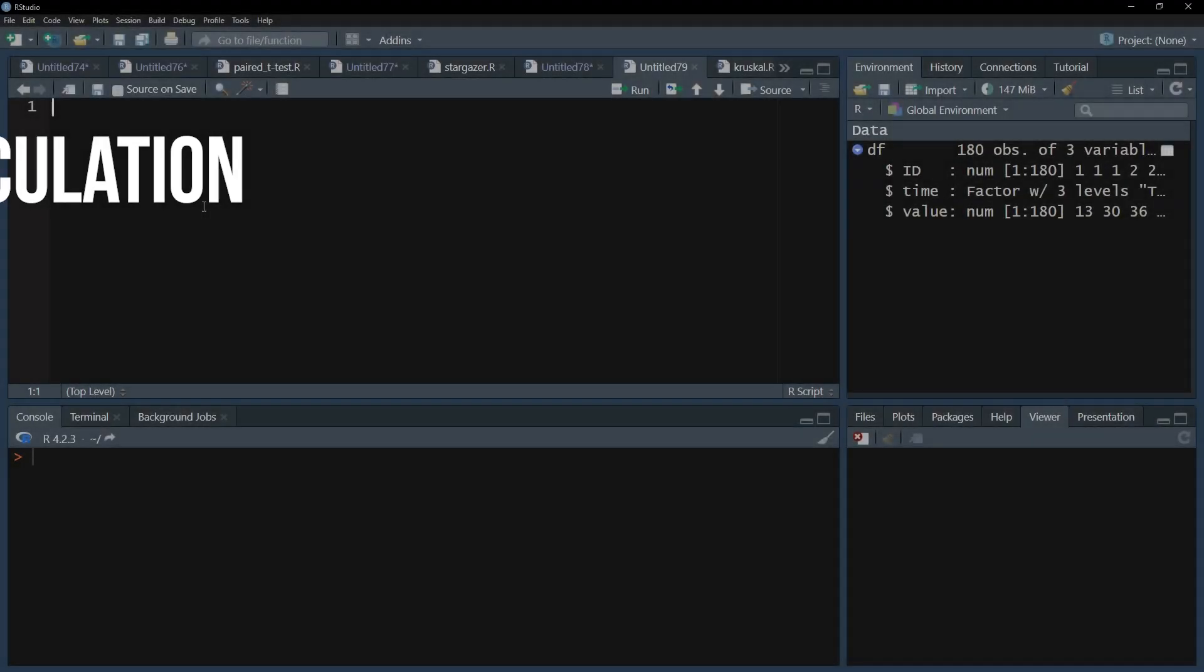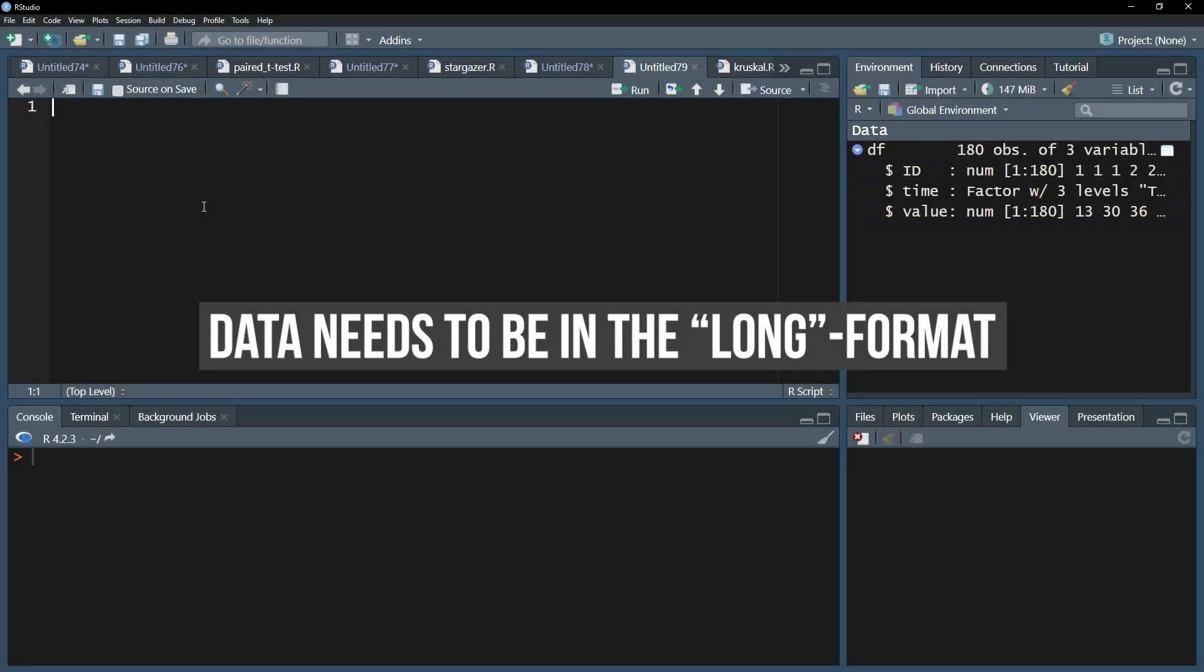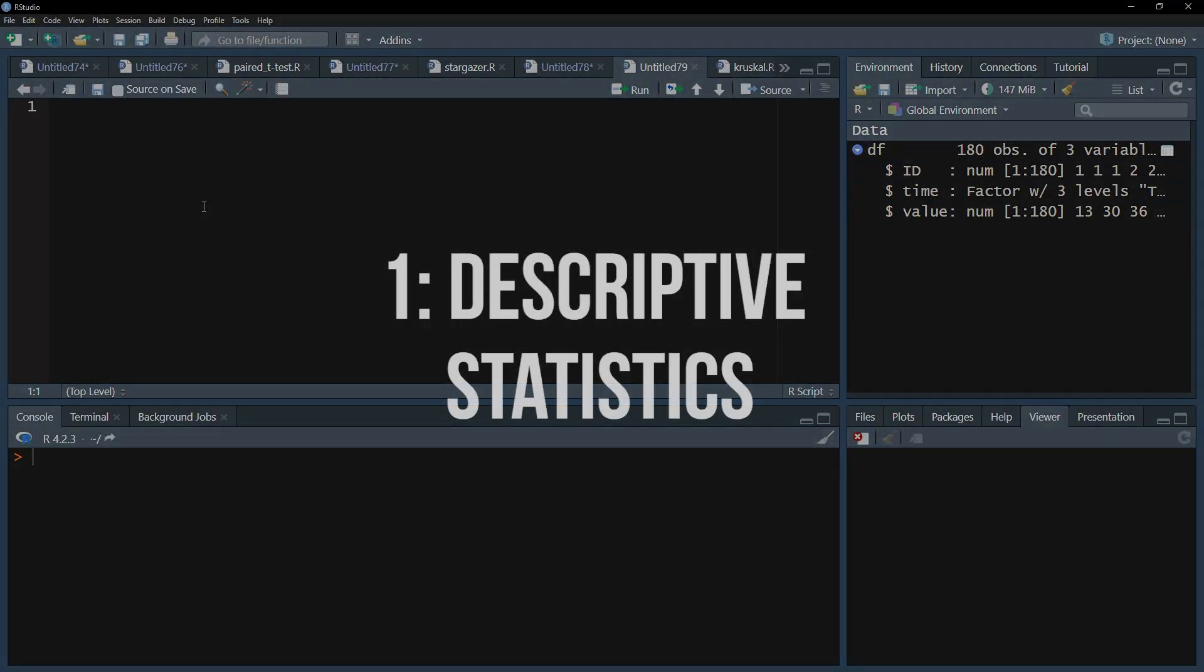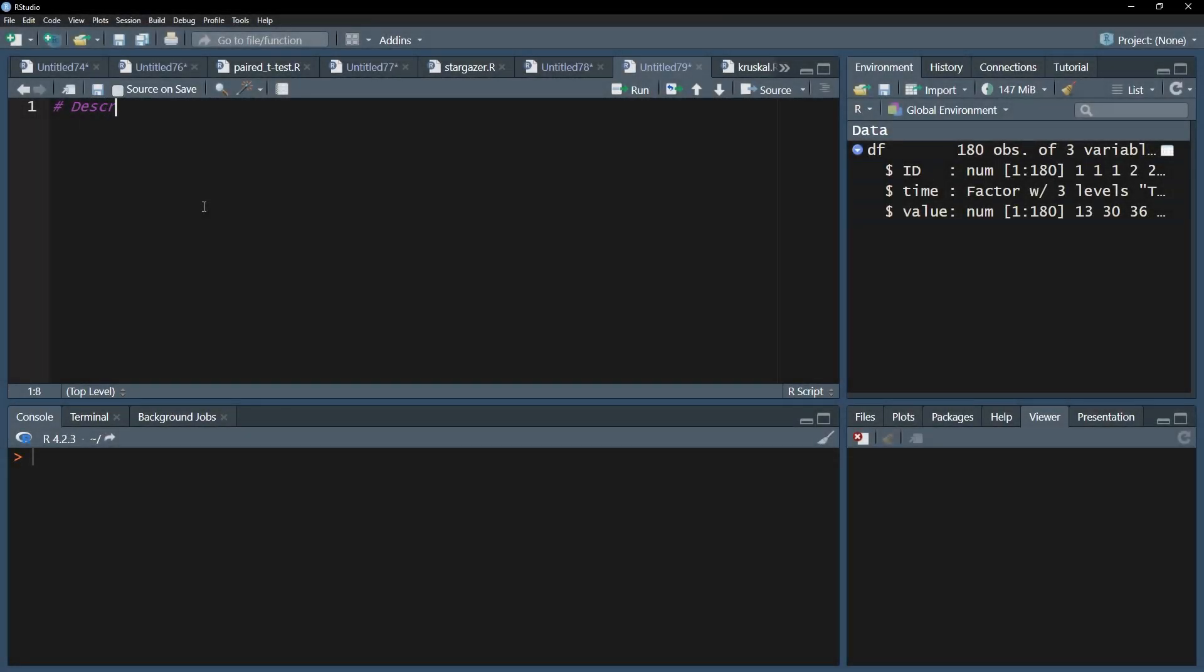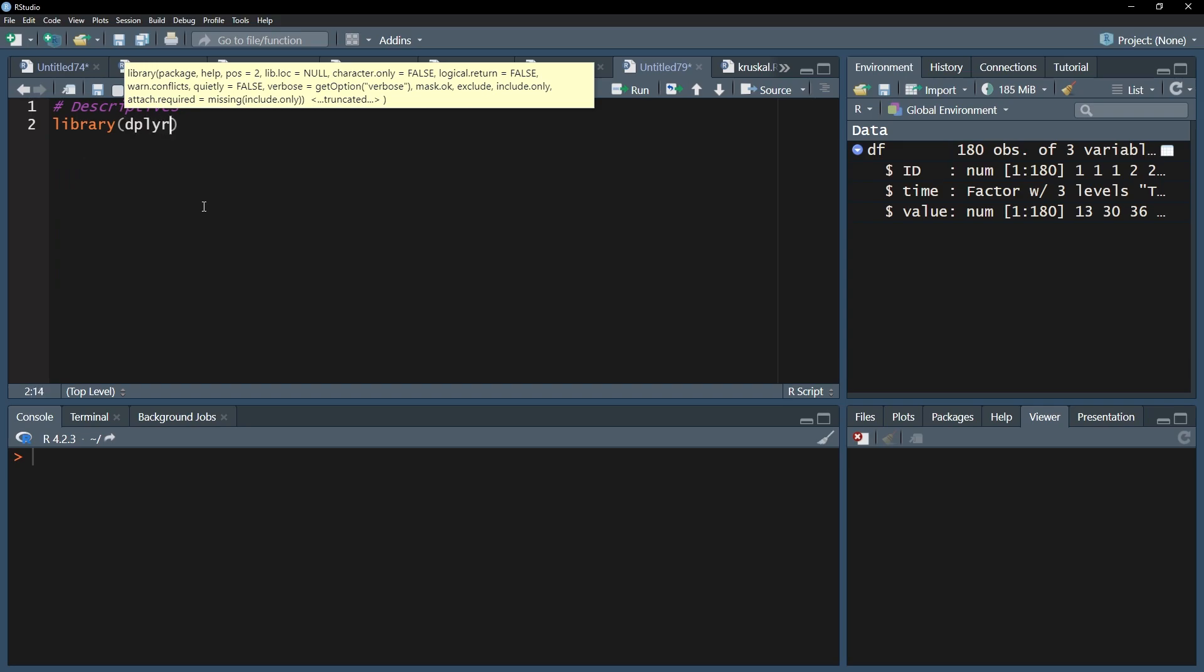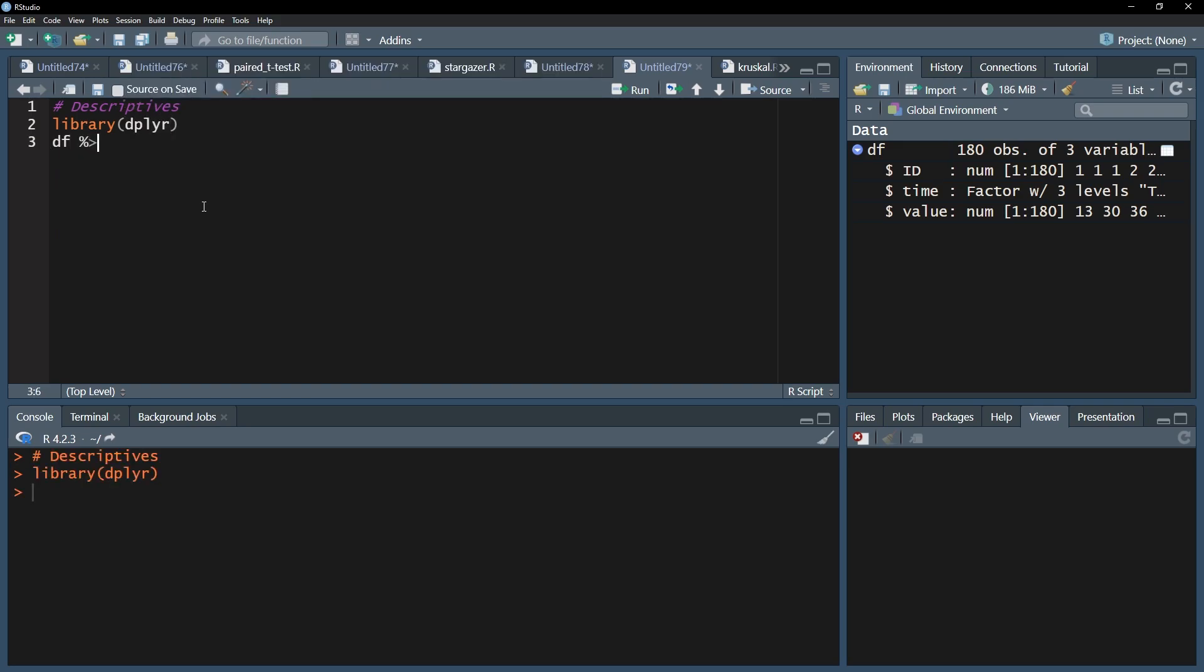Before starting, please make sure your data is in the so-called long format for the analysis to work. As a first step, I want to see some descriptive statistics to get a first idea of my data. One can use the convenient dplyr package and pipes. Start with your data frame, add the pipes operator behind it, and use the groupBy function with your time variable, here simply called time.